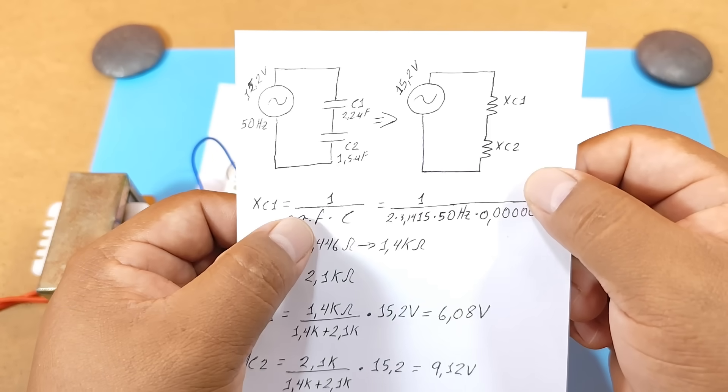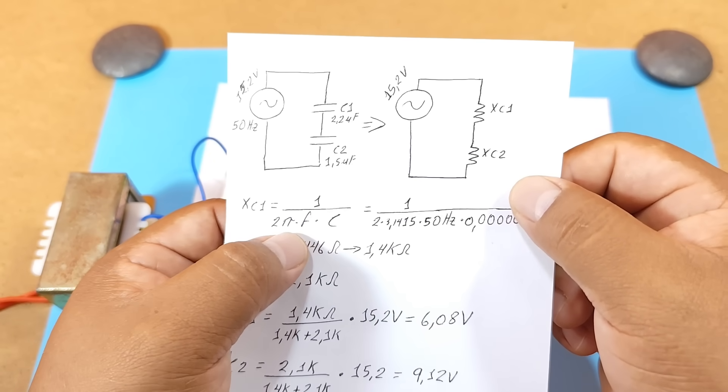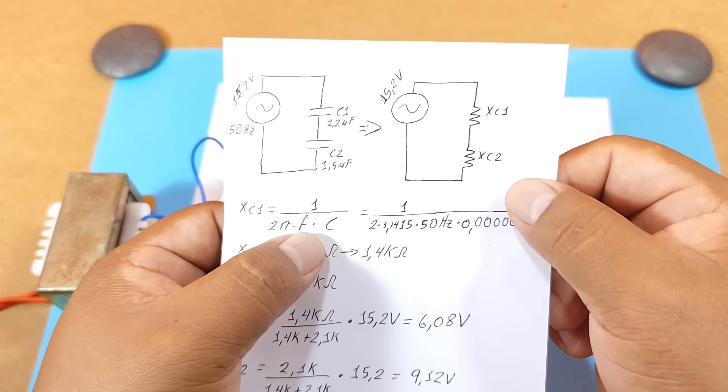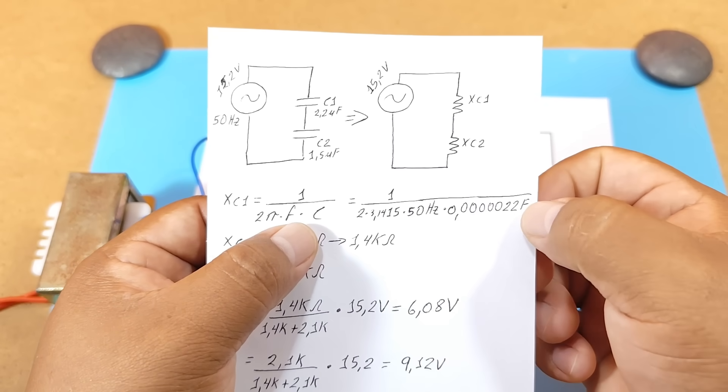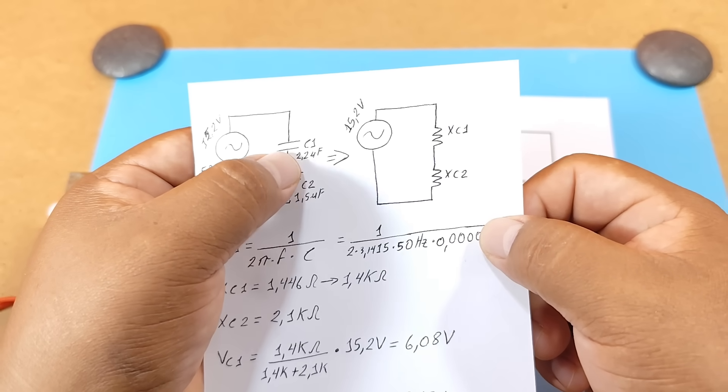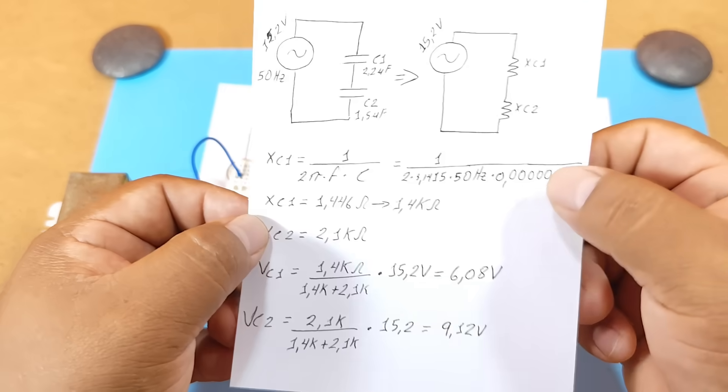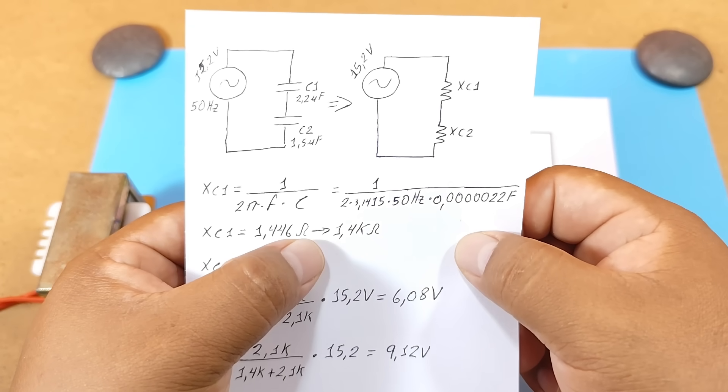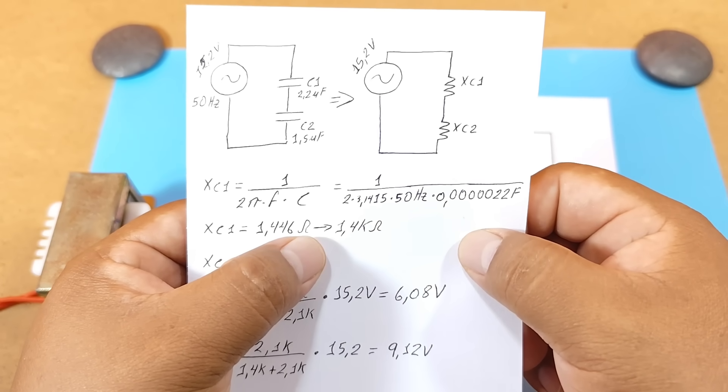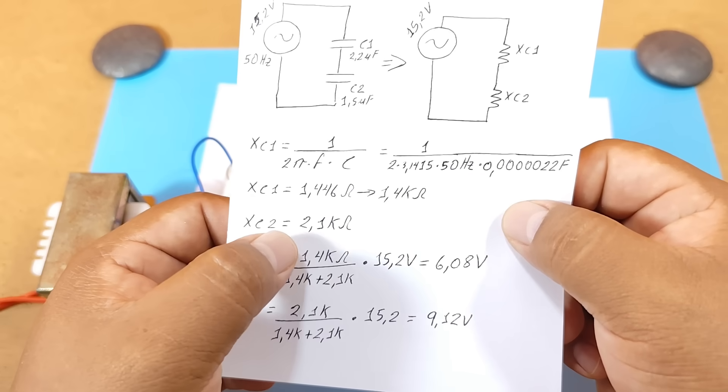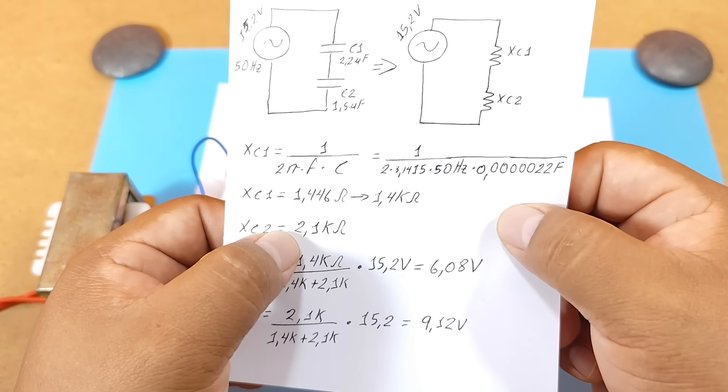Capacitive reactance can be calculated with this formula: 1 divided by 2 times pi, times the frequency in hertz, times the capacitance in farads. Now we can see that the 2.2 microfarad capacitor offers a reactance, or resistance, of 1.4 kilohms. And the 1.5 microfarad capacitor offers a resistance of 2.1 kilohms.